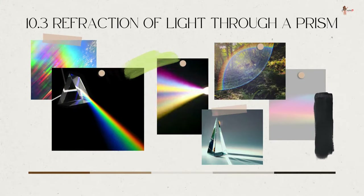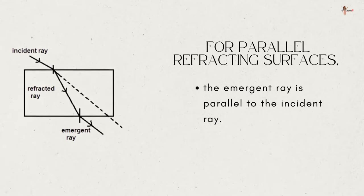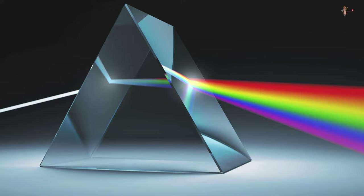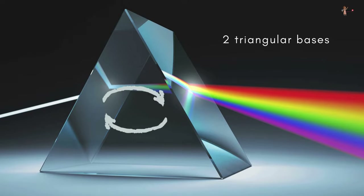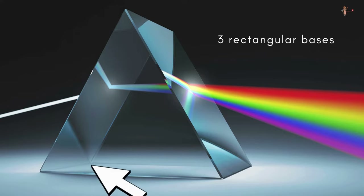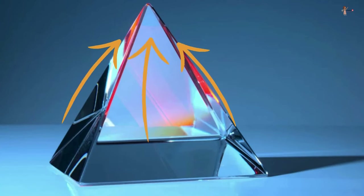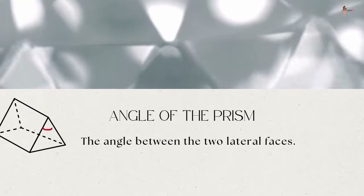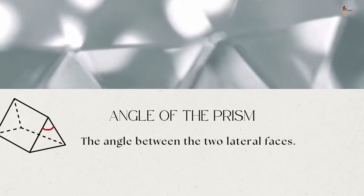Refraction of light through a prism: light passing through a rectangular glass slab emerges parallel to the incident ray, though slightly displaced laterally. A triangular glass prism has two triangular bases and three rectangular lateral surfaces inclined to each other. The angle between the two lateral faces is called the angle of the prism.